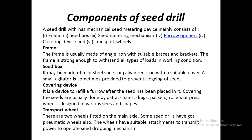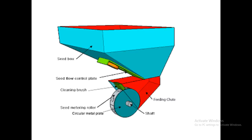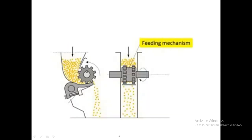The seed box includes a seed flow control rate, a cleaning brush to prevent seeds getting stuck in the seed metering roller, and a shaft. The seed metering roller or mechanism continuously rotates, and there is a feeding chute through which seeds enter the seed metering device. This is how the seed metering device works in a seeder.